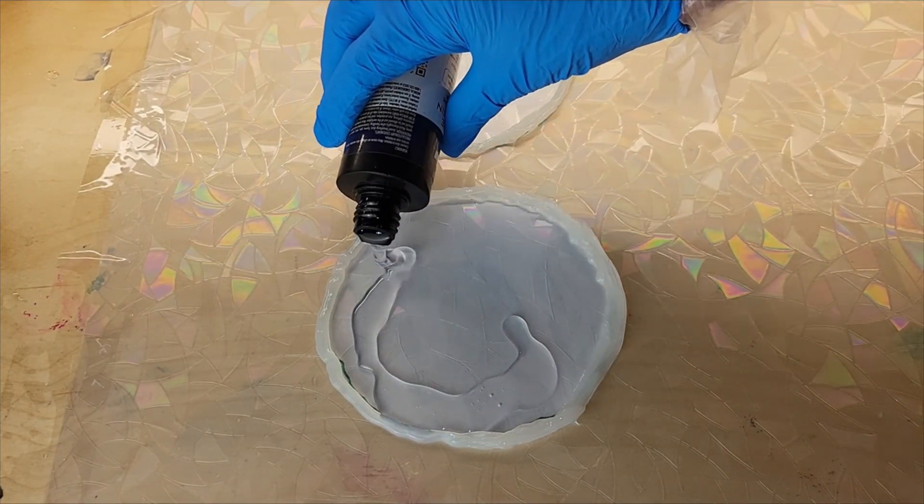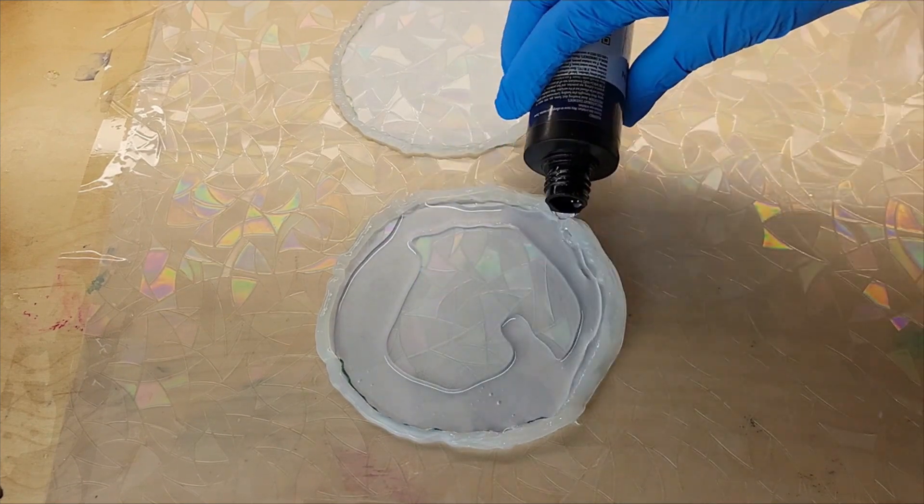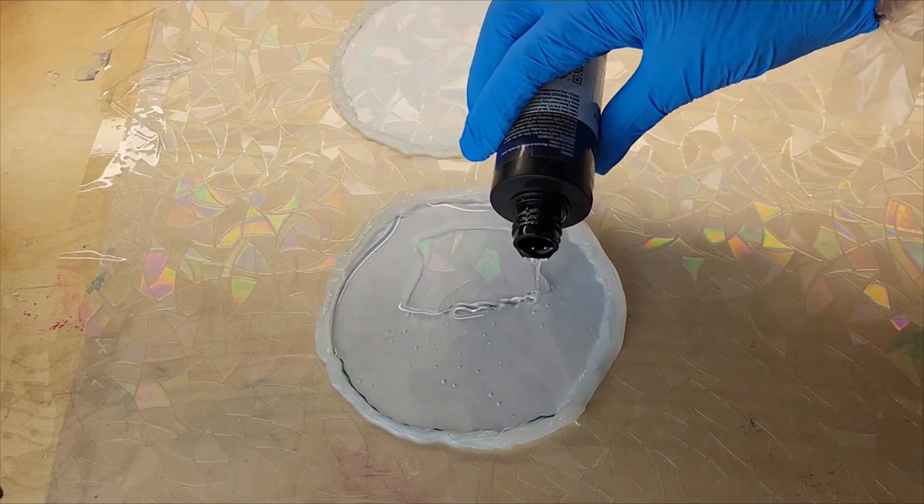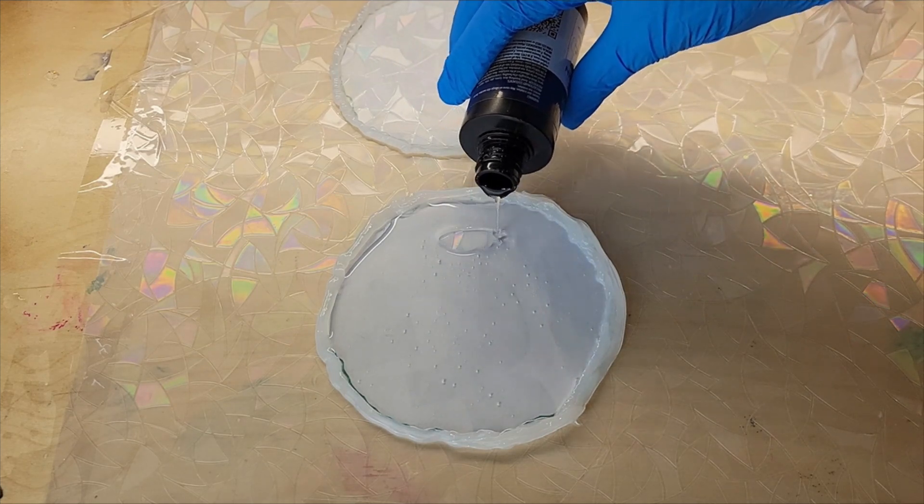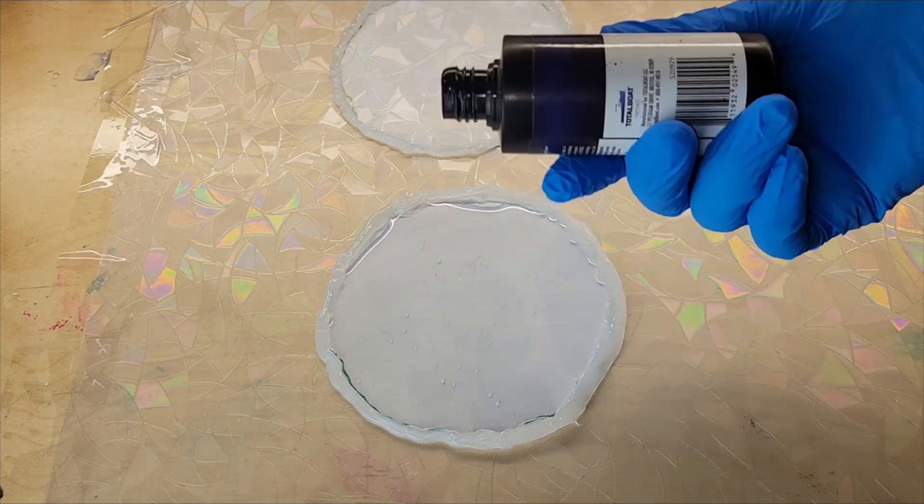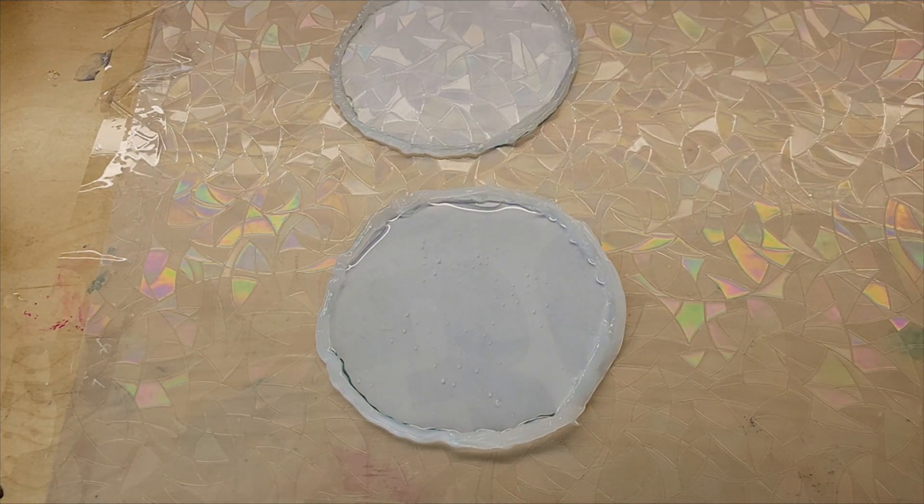Now we're going to go in and make our mold. This is 100% silicone caulk. You can get it off Amazon. You want to make sure it just says 100% silicone on the bottle. Just go around your form. Super easy to do. Let it dry overnight.